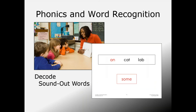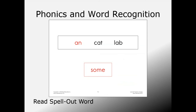Students continue developing phonics and word recognition by decoding words. Students first learn to decode phonetically regular words containing the featured sound—called sound-out words because they are decodable. Many of these words are also high-frequency words. Looking at T-4 in the sample, 'an' is a high-frequency decodable word. However, 'some' is also a high-frequency word but is not decodable—it's what we call a spell-out word, which is taught slightly differently.